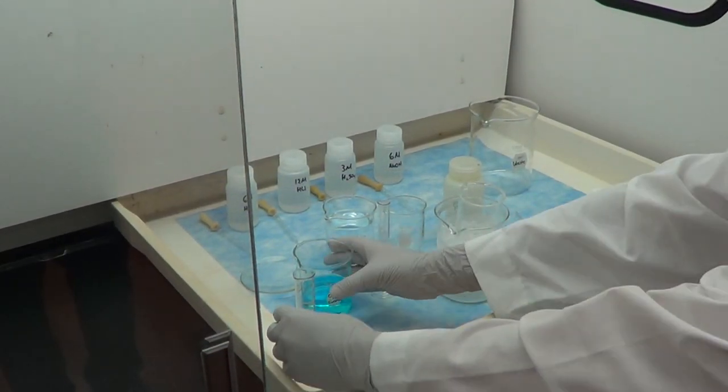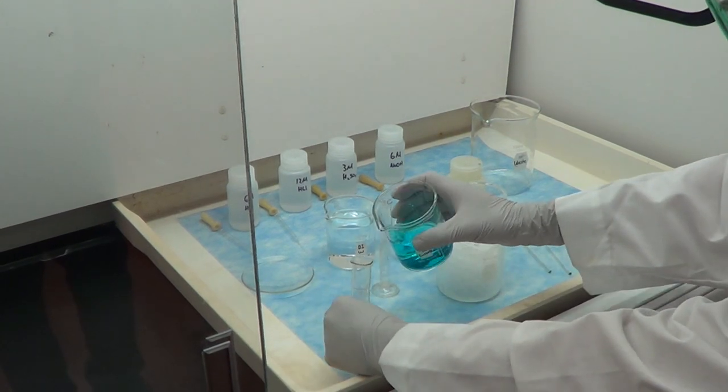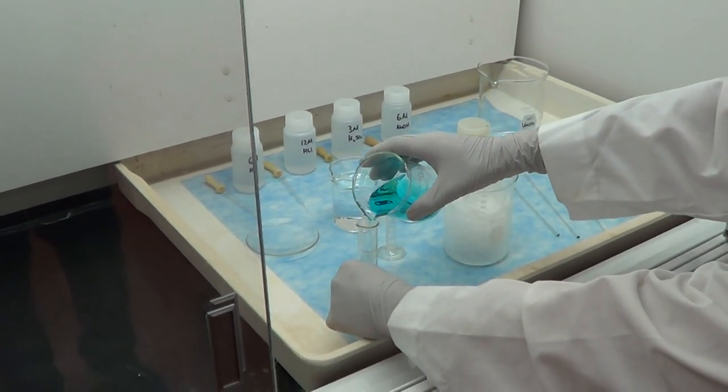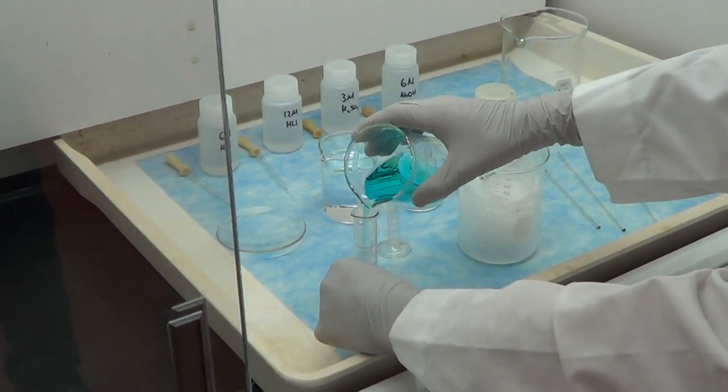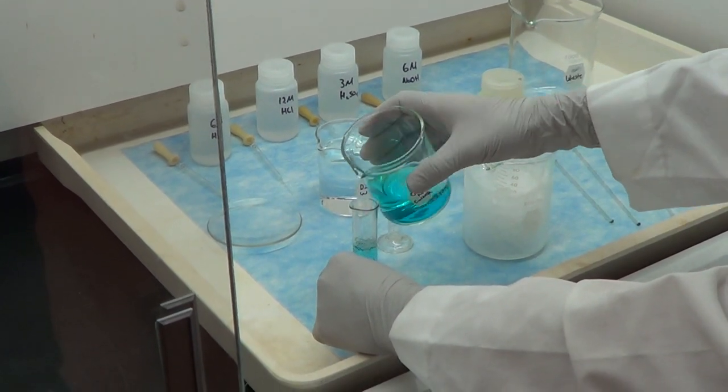Now we will carefully measure 10 ml of copper nitrate solution using the measuring cylinder and transfer it to the beaker whose weight was recorded before and placed on an ice bath.